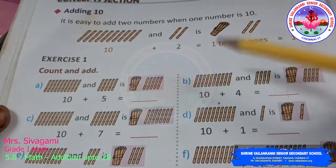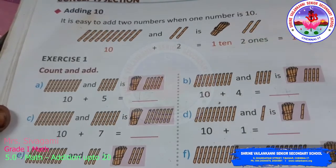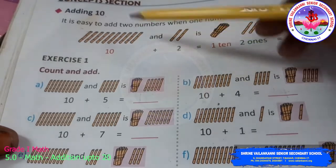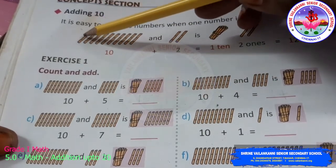It's easy to add two numbers when one number is 10. See if you have to add 10 and 2, 10 plus 2, one way is you have to count from the beginning.